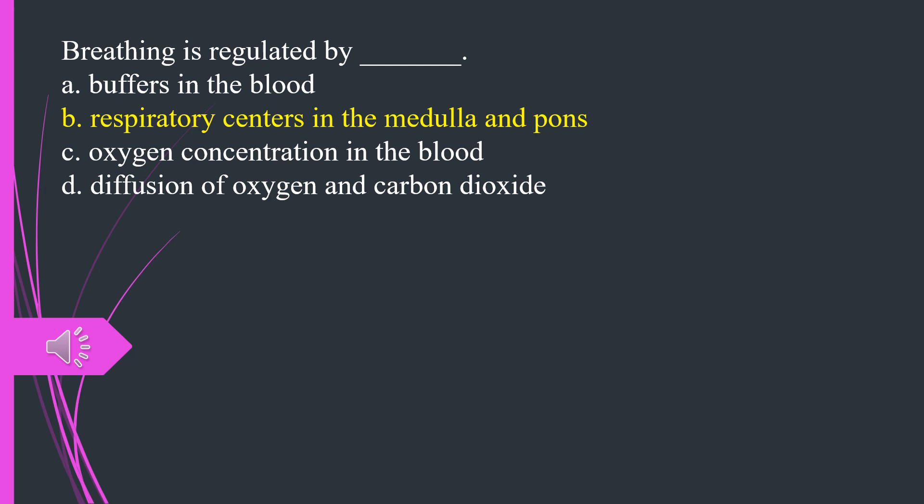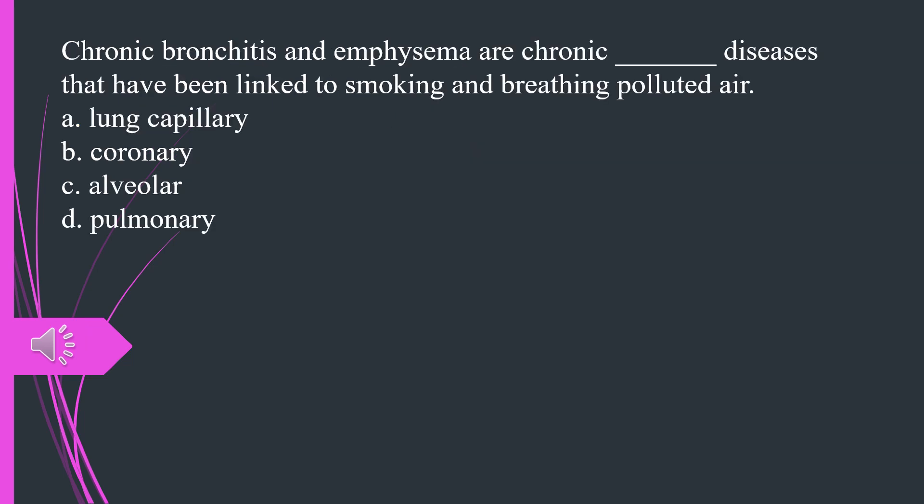Chronic bronchitis and emphysema are chronic what diseases that have been linked to smoking and breathing polluted air. A. Lung capillary B. Coronary C. Alveolar D. Pulmonary. The answer is D, pulmonary.